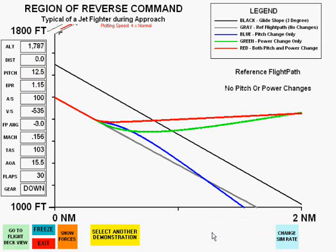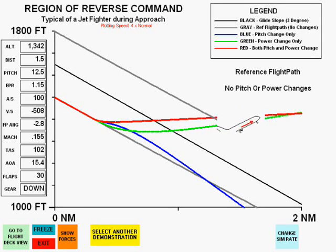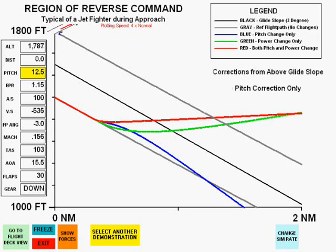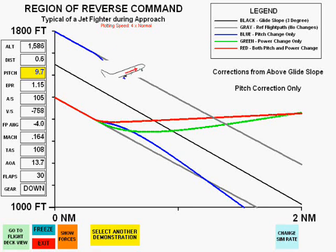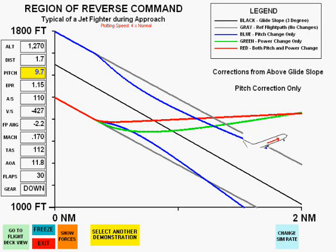We will now repeat the plot from above the glide slope. Again, the first plot is parallel to the glide slope with no pitch or power changes. As before, the change in pitch initially goes toward the glide slope, but then deteriorates in its interception and ends up deviating away, in this case above the glide slope.